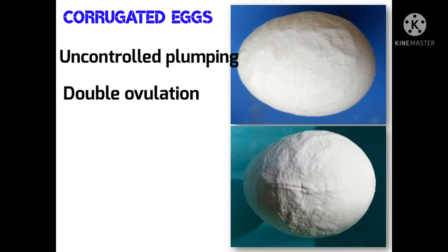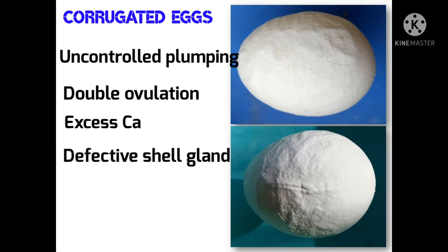The shell takes on a corrugated appearance as well. Excess calcium consumption is one of the major causes of formation of corrugated eggs. Another problem is when there is a defective shell gland, it may lead to the formation of corrugated eggs. It is often seen with hens recovering from infectious bronchitis. Over-nutrition, especially calcium deficiency and vitamin D3 deficiency, also causes corrugated eggs. Toxins like mycotoxins and heat stress also cause the formation of corrugated eggs.